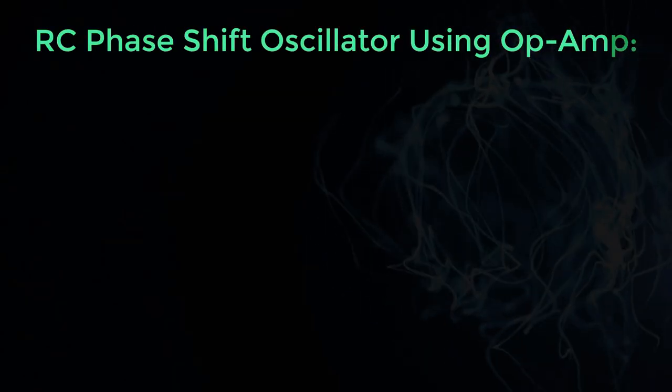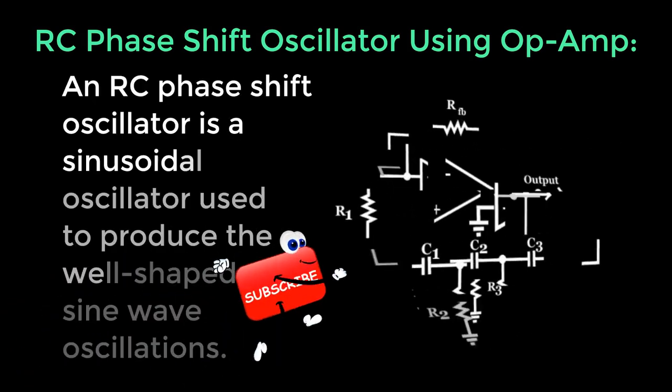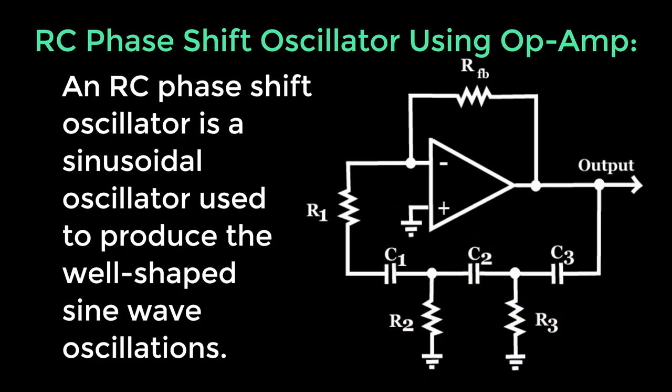Now let's look into RC phase shift oscillator using op-amp. An RC phase shift oscillator is a sinusoidal oscillator used to produce the well-shaped sine wave oscillations.